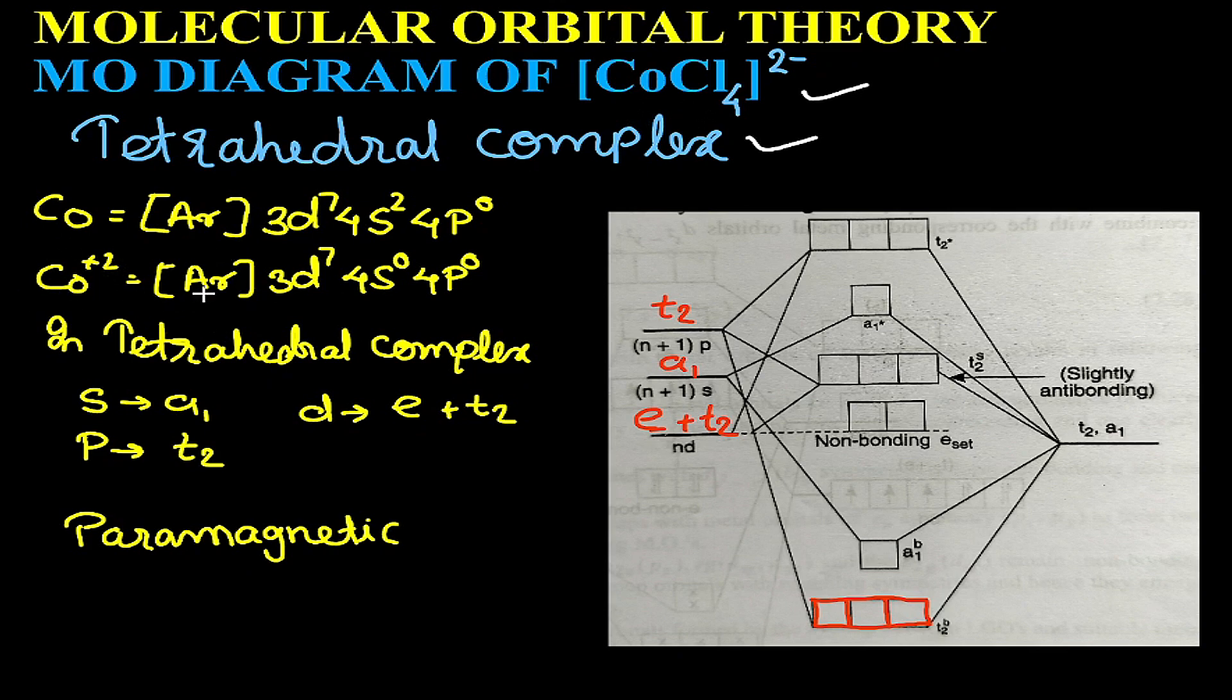So the electronic configuration will be argon 3d7 4s0 4p0. Now in tetrahedral complexes, as it does not have center of inversion, we are not mentioning whether the orbitals are gerade or ungerade and orbitals will be assigned the symmetry.